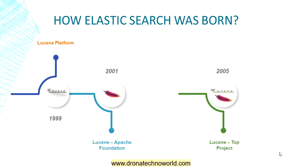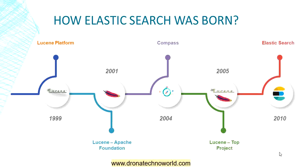Around the same time, something interesting also happened — the Compass framework was introduced in 2004, which is also based on Lucene but mainly created for scalable purposes. This is where Elasticsearch was born, based on Apache Lucene and Java technology, and containing the features of Compass. This started around the year 2010.